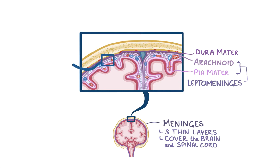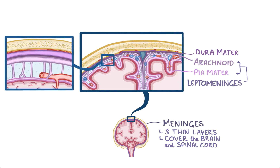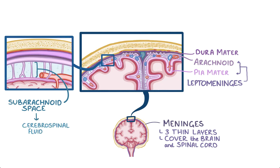Between the leptomeninges there's the subarachnoid space, which houses cerebrospinal fluid, or CSF. CSF is a clear, watery liquid which is pumped around the spinal cord and brain, cushioning them from impact and bathing them in nutrients.